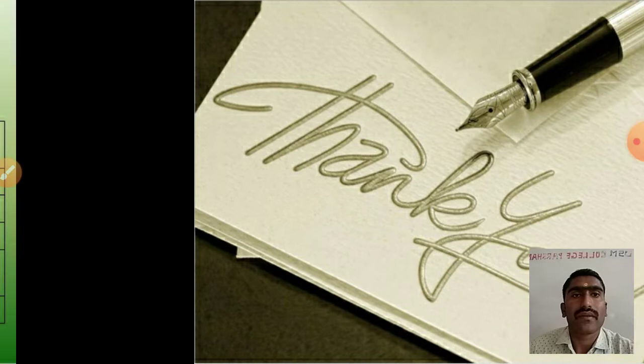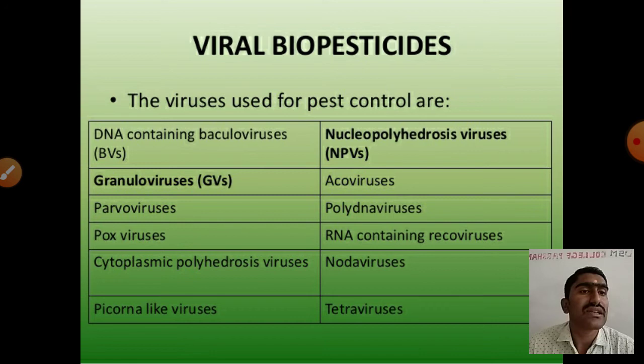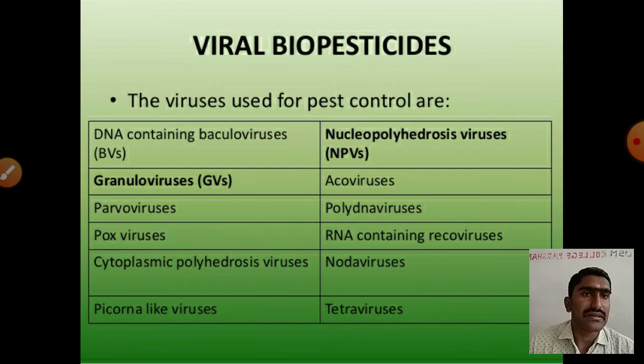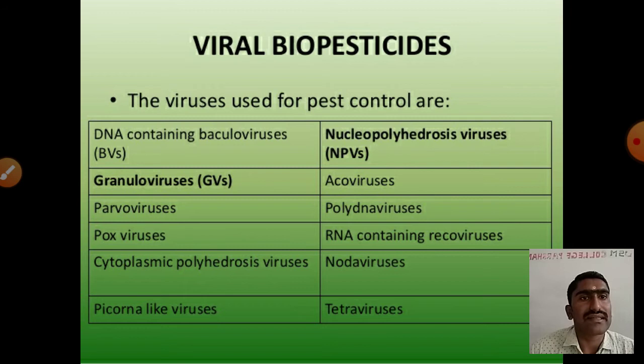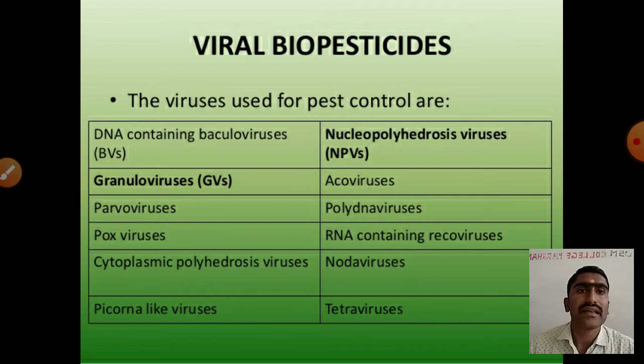The viruses used for pest control — DNA-containing Baculovirus is an example of viral biopesticides. Other examples include Nucleopolyhedroviruses, Granuloviruses, Parvoviruses, Poxviruses, Cytoplasmic polyhedroviruses, Picorna-like viruses, Echoviruses, Polydnaviruses. RNA-containing examples include Reoviruses, Nodaviruses, and Tetraviruses.